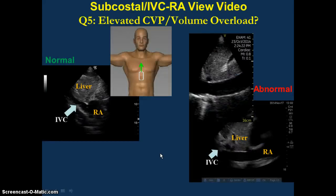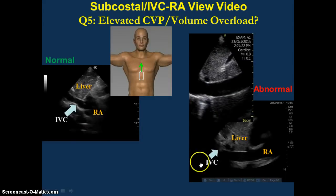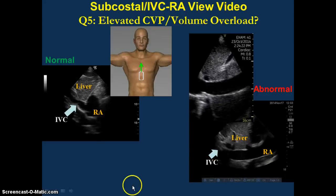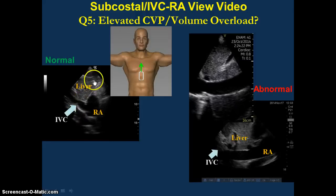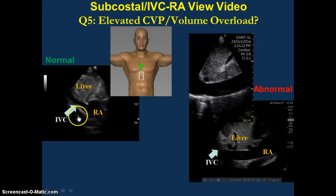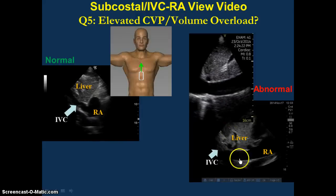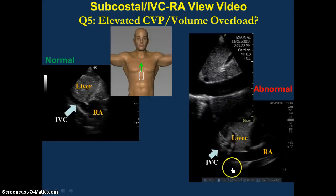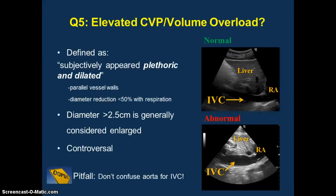Finally, we're going to move to the subcostal region to take a look at the inferior vena cava and the right atrium. A lot of people have put a lot of stock into looking at the IVC for assessing volume status and central venous pressures. I personally don't like that in isolation, but I think it gives you a lot of information when used in conjunction with the heart and the lungs. In general, we're looking at the size of the inferior vena cava as it courses through the liver into the right atrium. When it's relatively small and collapsible, it suggests normal volume status and low central venous pressures. When it is large and non-collapsible without changes during respiration, that suggests a high CVP or elevated volumes.